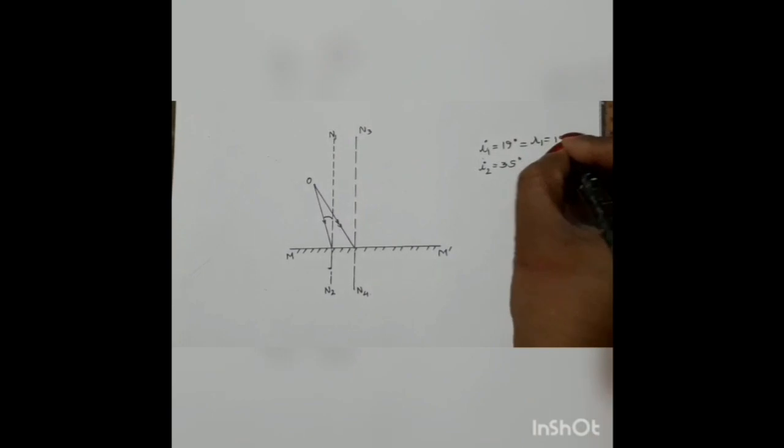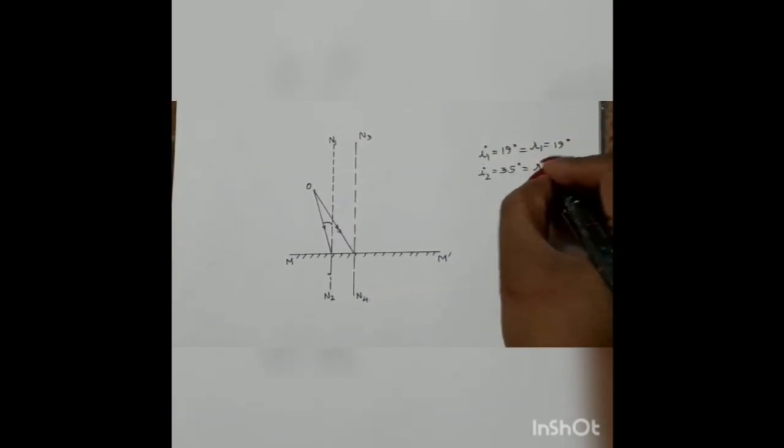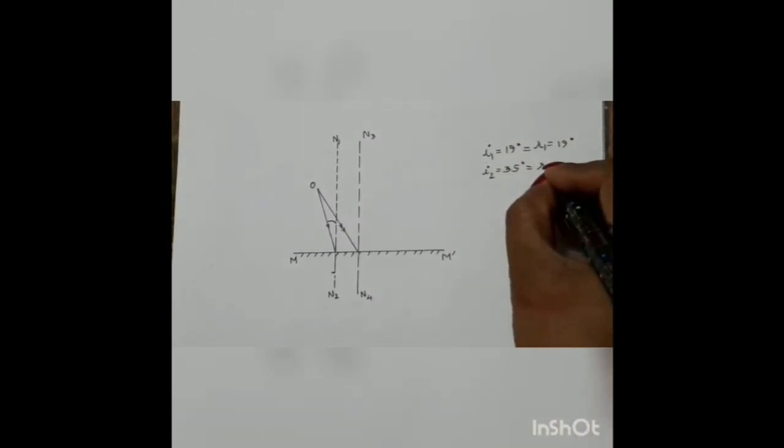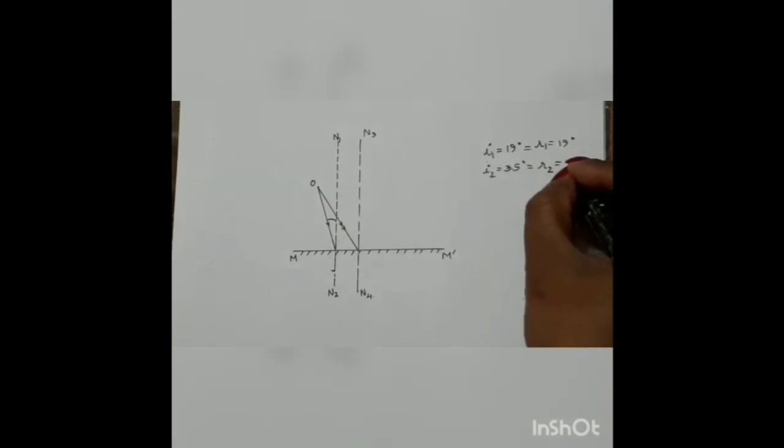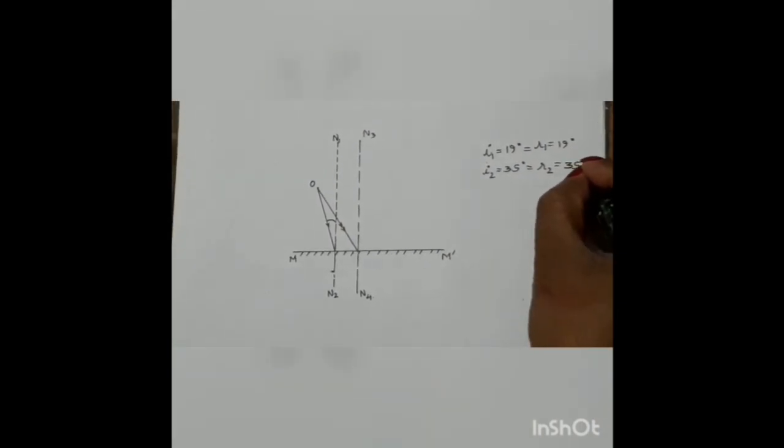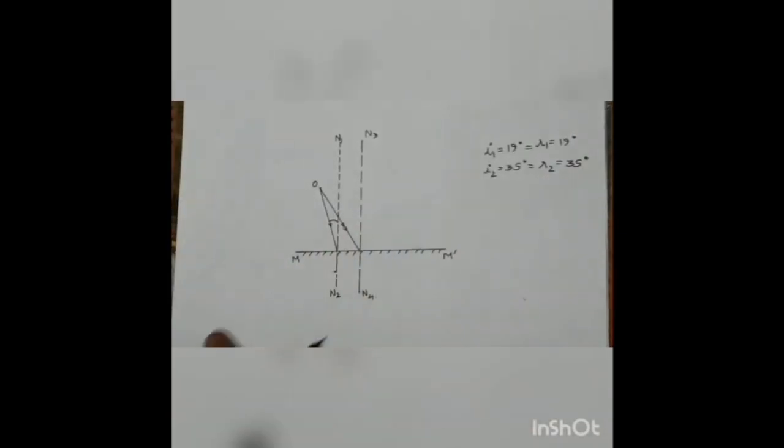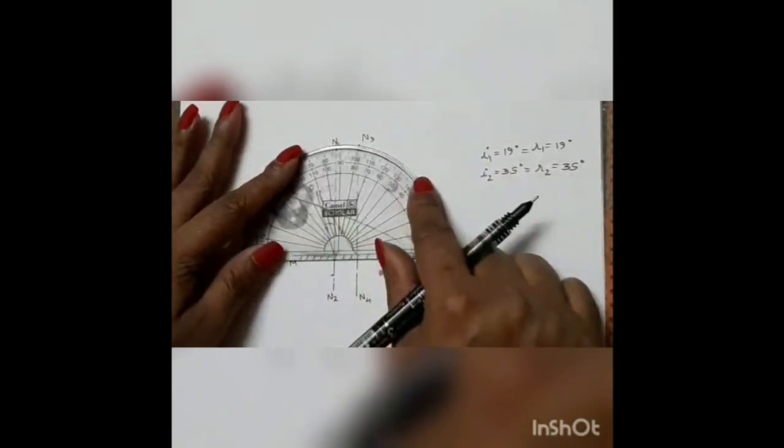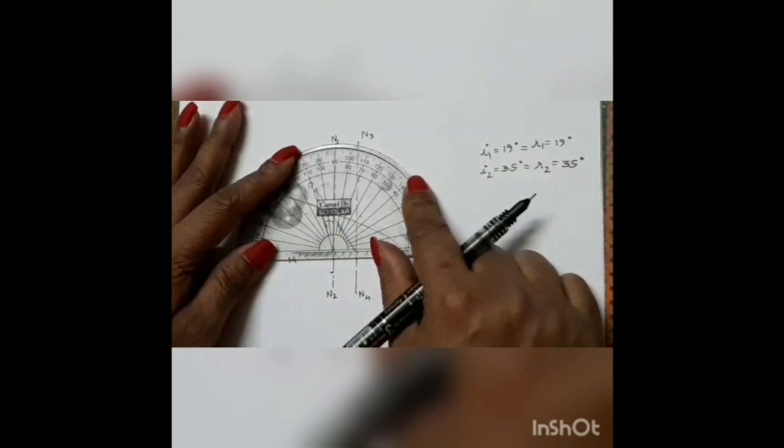Angle I1 will be equal to R1 which is 19 degrees, and angle I2 will be equal to R2 which is equal to 35 degrees. So we'll make these reflected rays, the two reflected rays.